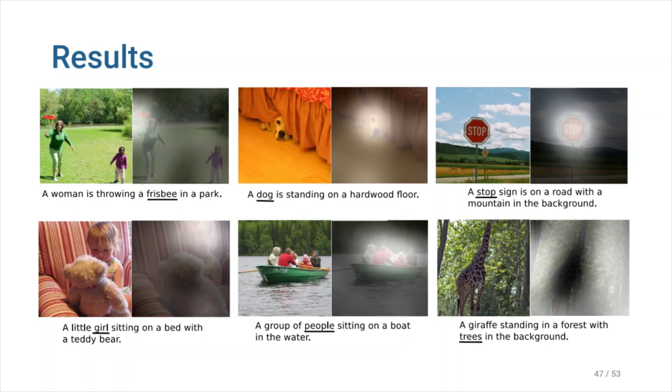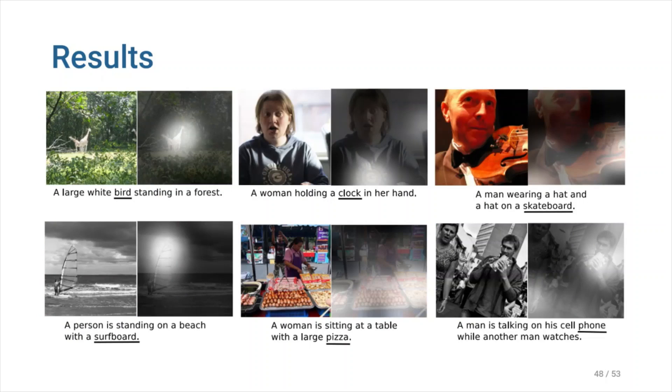As we can see in this figure, the model learns alignments that agree very strongly with human intuition. We can see some examples of caption generation errors on this slide. These visualizations can be used to get an understanding of why such errors were made.